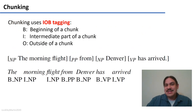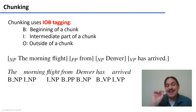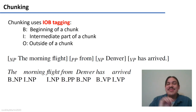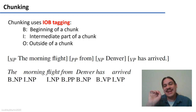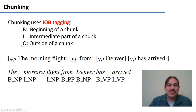The way chunking does this is by using a kind of tagging called IOB tagging. The IOB letters refer to: B — the beginning of a chunk; I — the intermediate part of a chunk; and O — any elements that are outside a chunk. The computer is going to try to mark everything for one of these three positions.